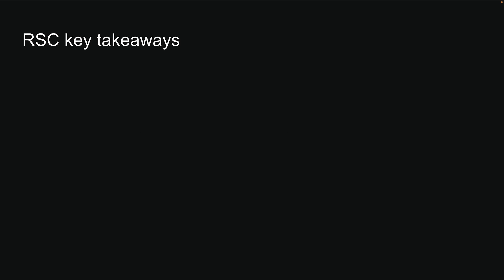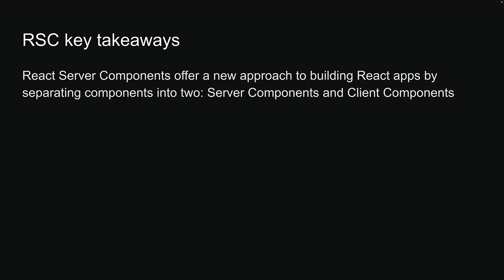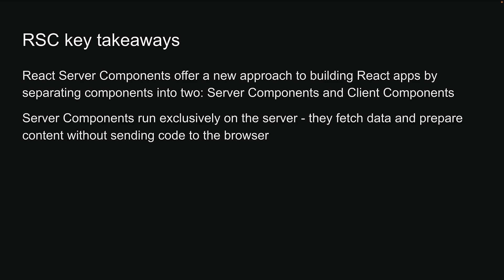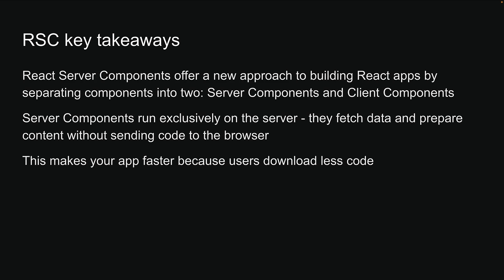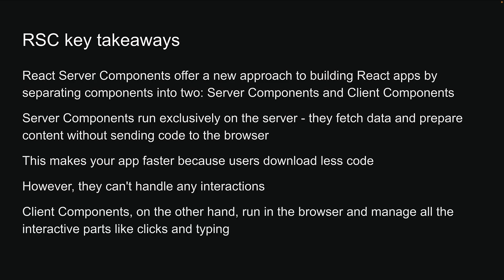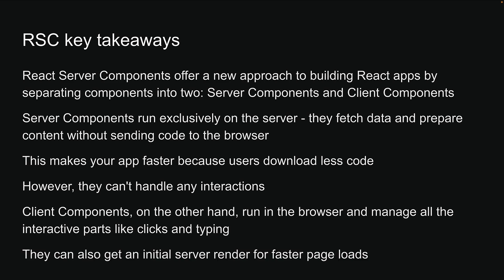We've covered quite a bit, so let me simplify with the key takeaways. React server components offer a new approach to building React apps by separating components into two types: server components and client components. Server components run exclusively on the server — they fetch data and prepare content without sending code to the browser, making your app faster because users download less code. However, server components can't handle any interactions. Client components, on the other hand, run in the browser and manage all the interactive parts like clicks and typing. They can also get an initial server render for faster page loads. Together, they make websites faster, more secure, and more accessible to everyone regardless of their device or location.